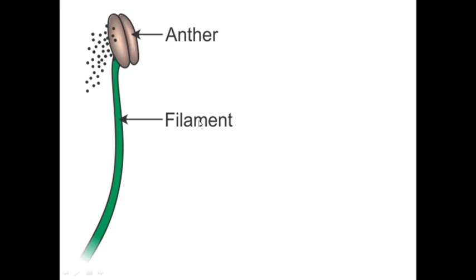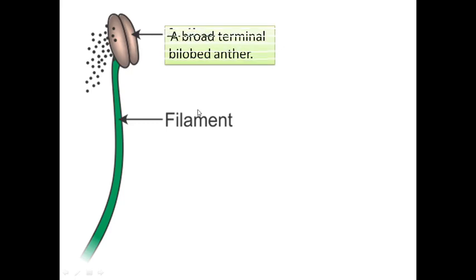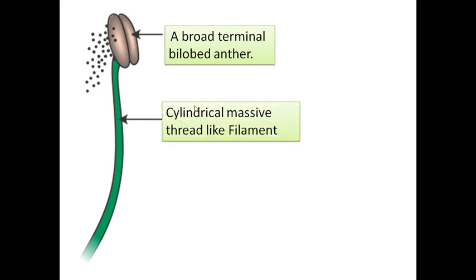If we zoom into the structure of the stamen, there is a long thread-like structure which is the filament, and then the knob-like structure at the top which we call as the anther. Together the anther and filament form the stamen or androecium. The anther is a broad, terminal, bilobed structure, and the filament is a long cylindrical thread-like structure.